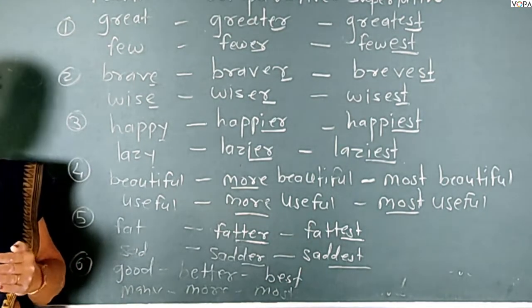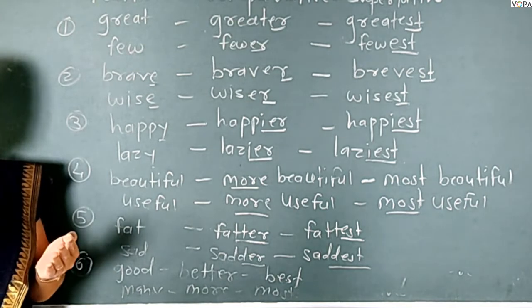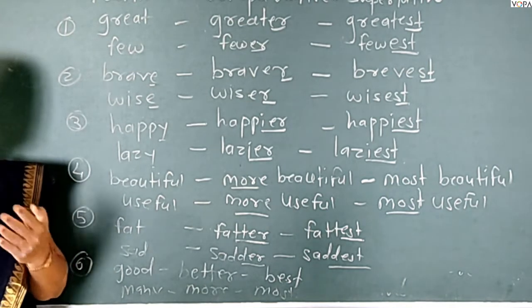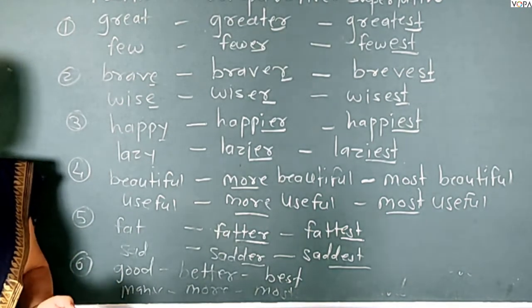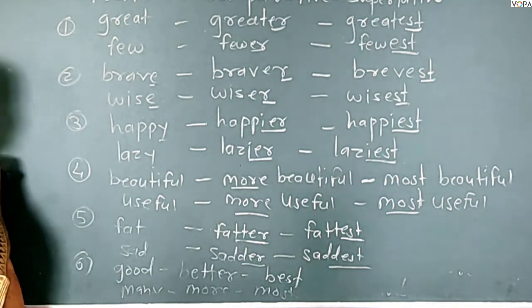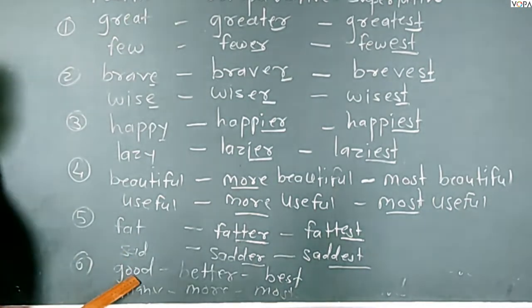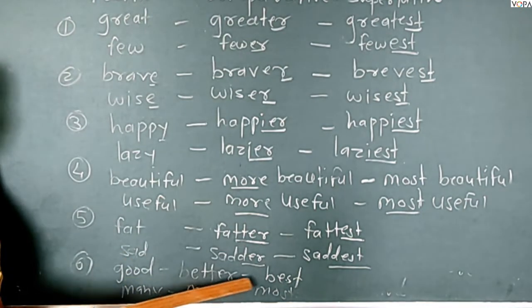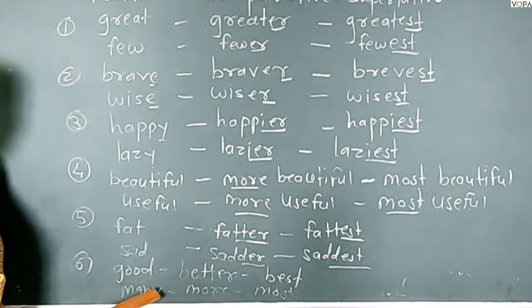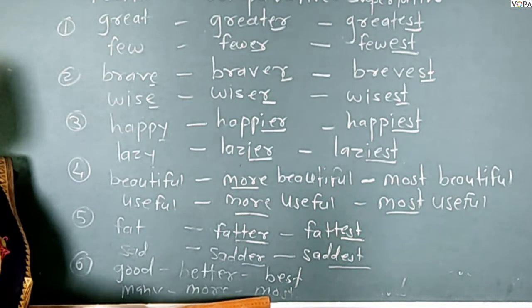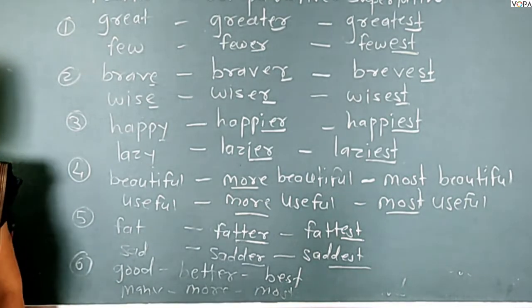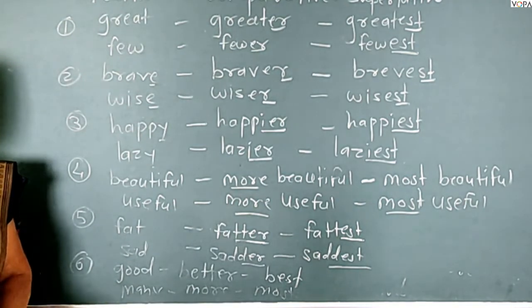The comparative form and superlative form can also be irregular. For example: good, better, best. Many, more, most. Bad, worse, worst.